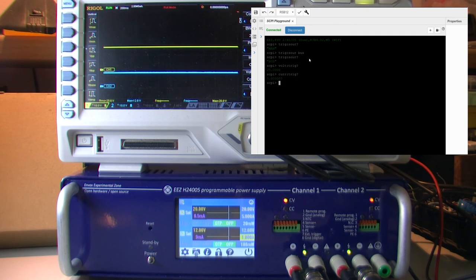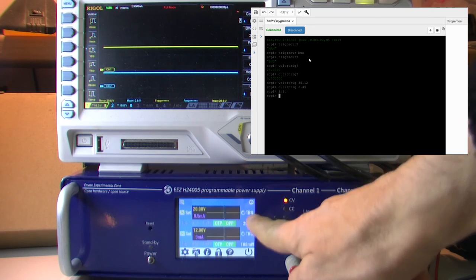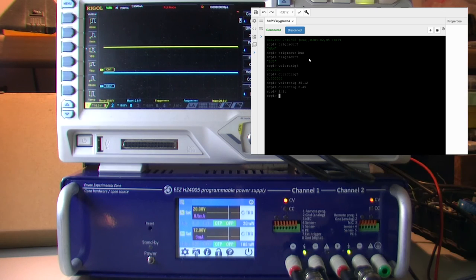Here I can also check what is the step value or triggered value for voltage and current, or I can change that to something else. And now I can initiate trigger system. And this is visible also here that it's waiting for trigger. And now we just need a command to start the trigger.